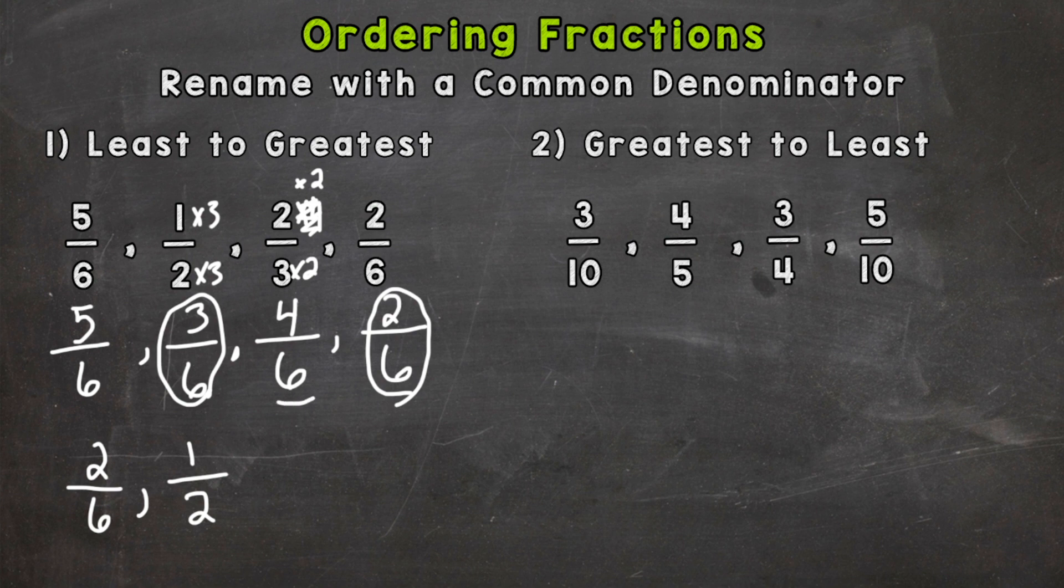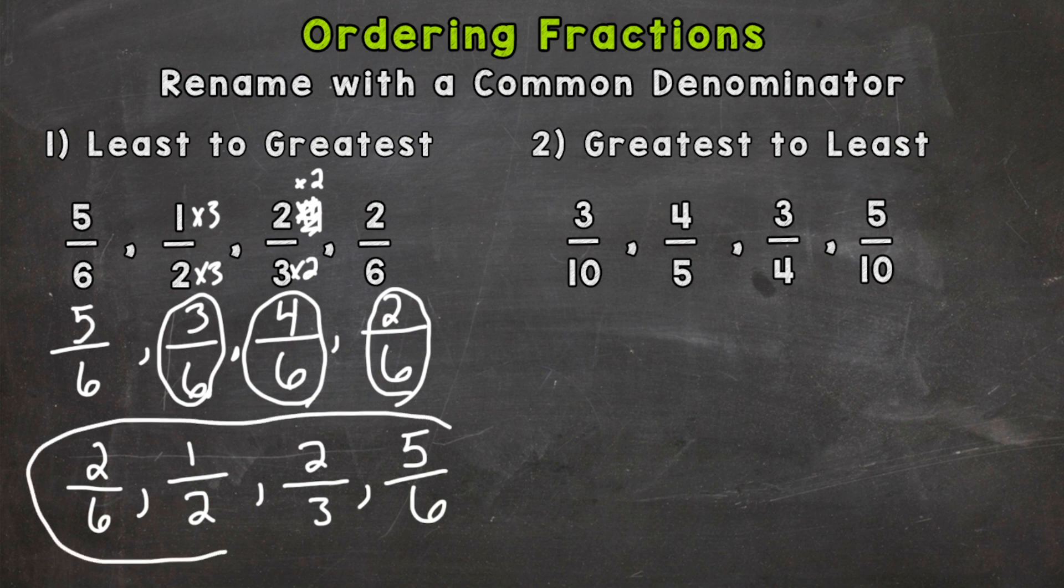Next would be 4 sixths or 2 thirds from the original list. And then lastly, the greatest fraction, 5 sixths. And there you have it. Those fractions are now in order from least to greatest. This is the final answer here.